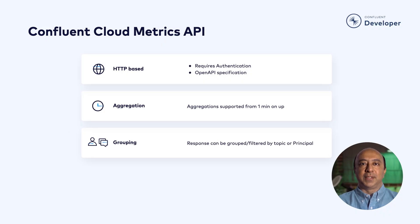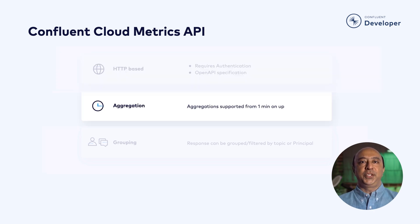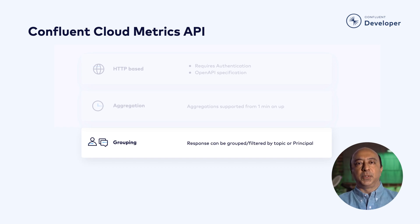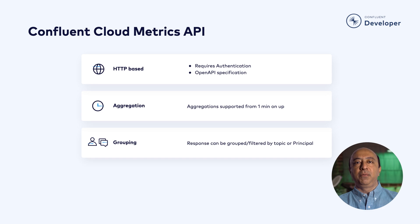The metrics API for our Kafka cluster, as we mentioned, is available over HTTP and is documented with OpenAPI. Key things to note are that we can choose the aggregation level for the data returned — either by the minute, by the hour, or even longer. We can also choose to get our data filtered or grouped by topic or principle. Grouping by principle is really useful, for example, when we are a shared services team managing access to the Kafka cluster and need to provide telemetry to each team for their specific applications.